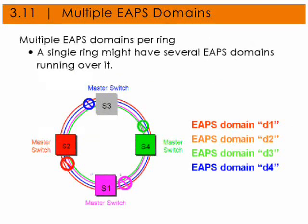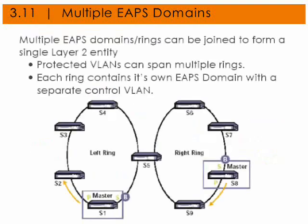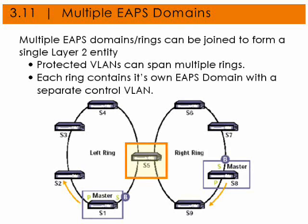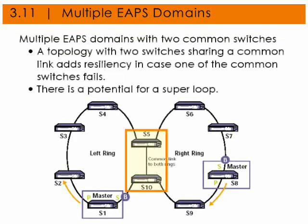As shown here, a single ring might have several EAPS domains running over it. For instance, this has four switches and four domains. Multiple EAPS domains and rings can be joined to form a single layer 2 entity. Protected VLANs can span multiple rings, and each ring contains its own EAPS domain with a separate controller VLAN. A topology with two switches sharing a common link adds resiliency in case one of the common switches fails.